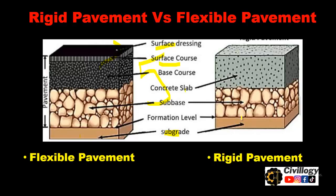Rigid pavement has only three layers. The first is subgrade, which could be natural or improved. Then there is sub base, which is optional — the concrete layer can be placed directly over the subgrade if its bearing capacity is very good. The number of layers also depends on many factors such as traffic loads, traffic conditions, weather conditions, and moisture at the bottom of the road.